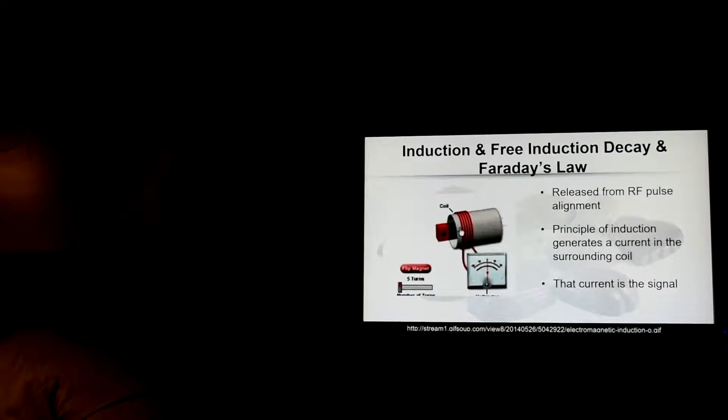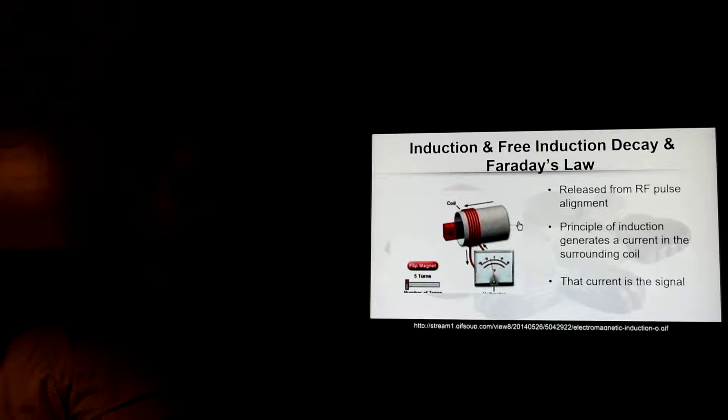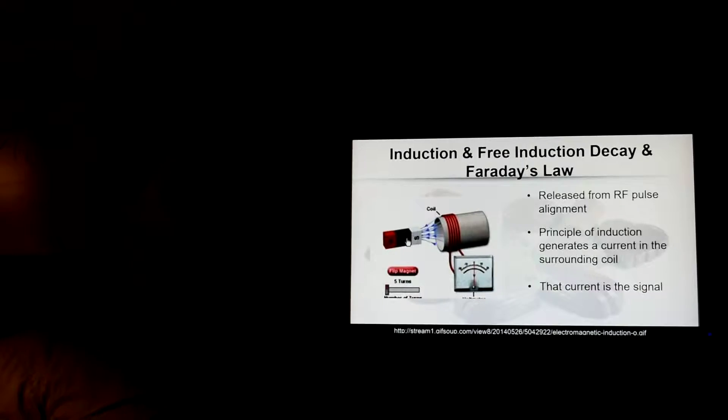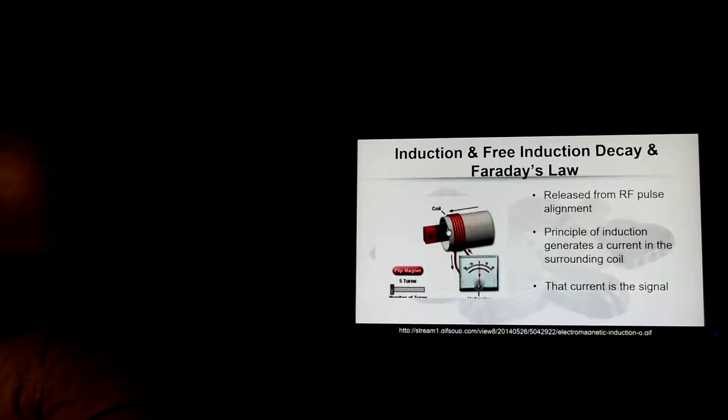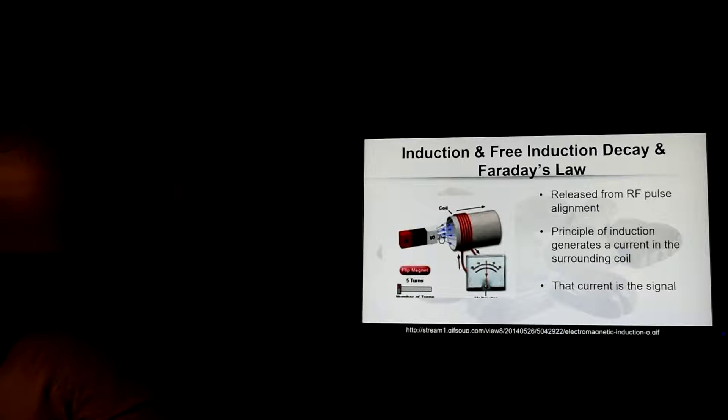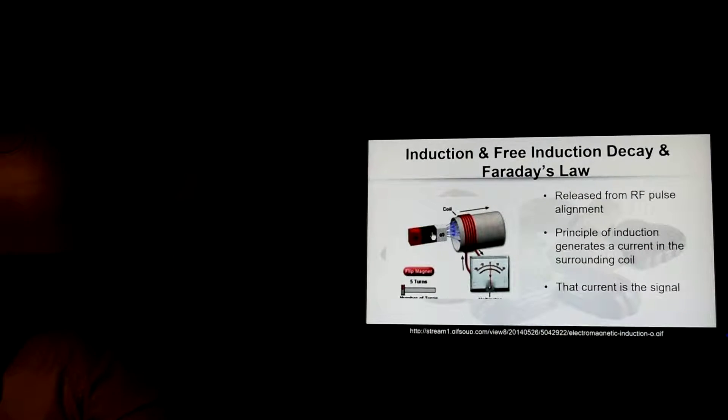And if you remember Faraday's second law, or the principle of induction, a moving magnetic field will make a change in voltage. On a closed circuit, it will induce a current, and that's the current that we measure. That's our signal. Because it's allowed to naturally decay as a signal, we call it free induction decay when it comes to NMR.